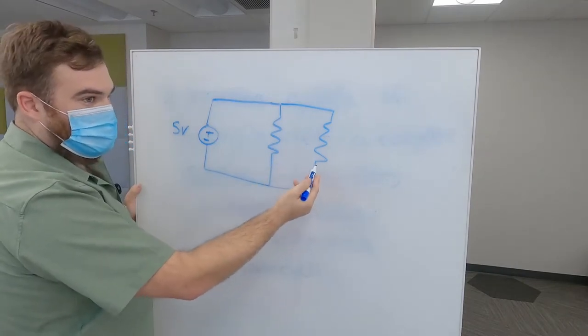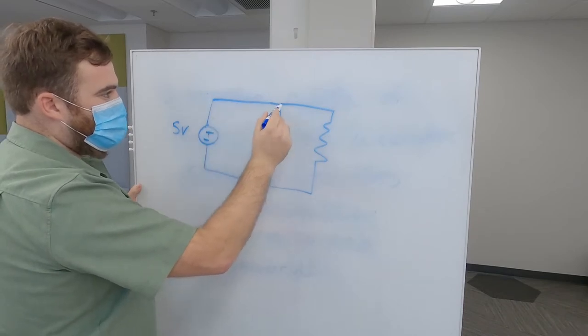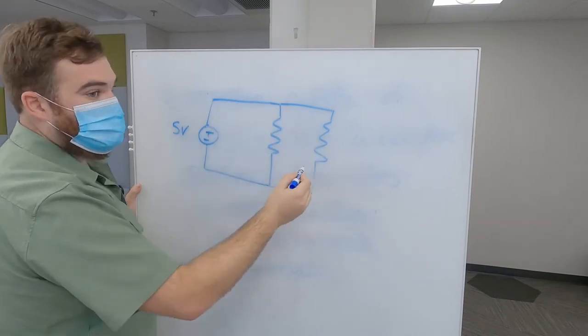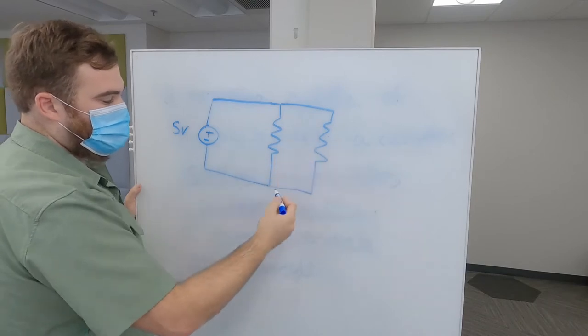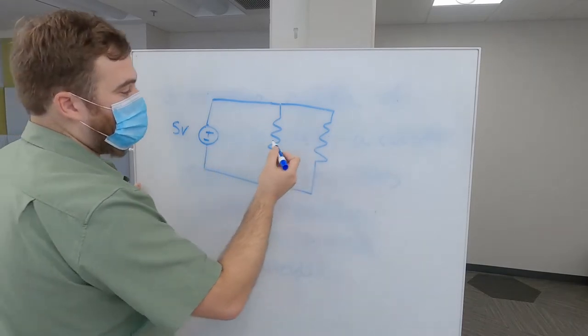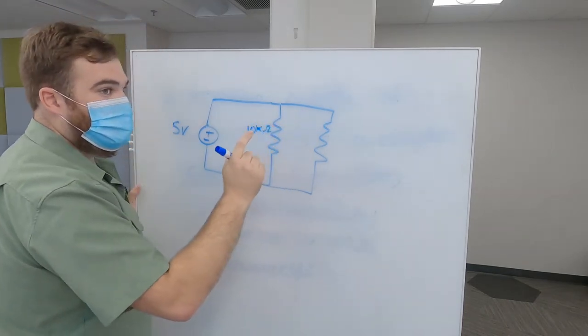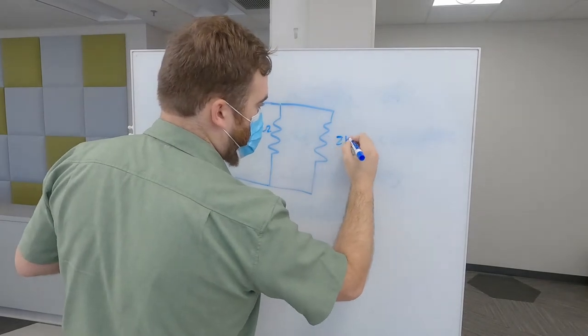We call this parallel because the current going through these resistors has to come out of the positive end, then has to split and go into both resistors separately, and then join up at the end and go to negative. So let's say this first one has a 10 kilohm resistance, and this one has a 2 kilohm resistance.